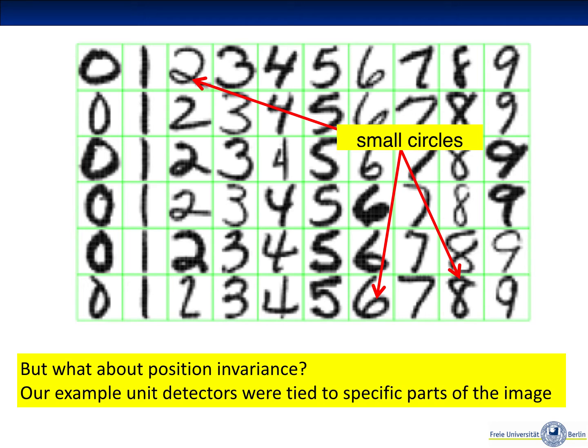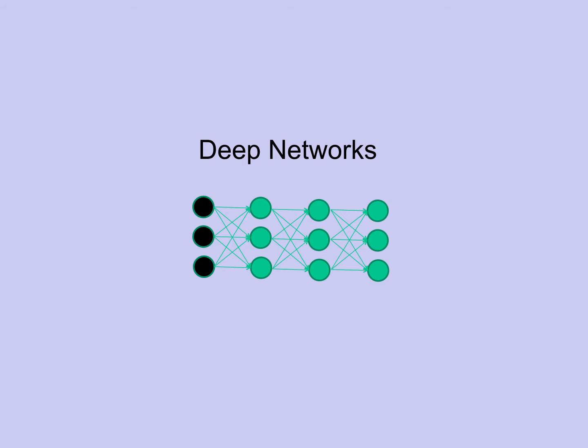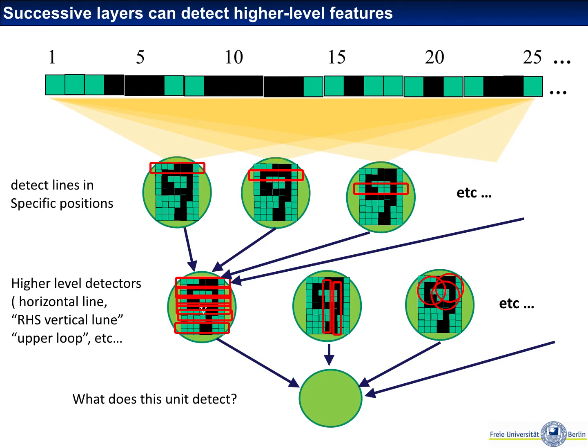One way to get some generalization into this featurization is to make the network deeper. Consider for example that we have learned in the first hidden layer feature detectors for detecting a horizontal line in row 1, row 2, row 3, and now we want to generalize this into a feature that says any horizontal line being detected. Then we can combine the outputs of those position-specific feature detectors into a more general feature detector which basically gets active when there is any horizontal line in the image.